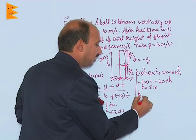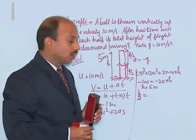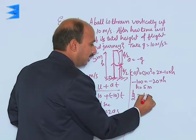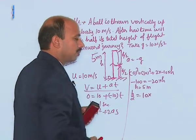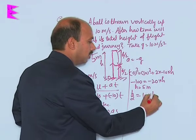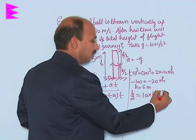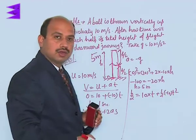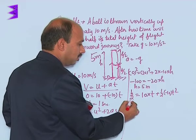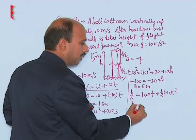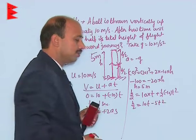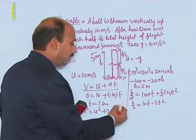We can write here h by 2 is equal to, what was the initial velocity we can take here 10. So we can take here 10 into t plus half into minus 10 into t square and we can solve it. We will be getting h by 2 is equal to 10 t minus 5 t square.